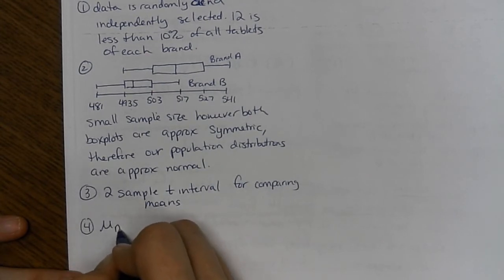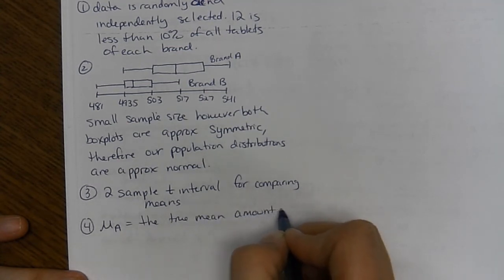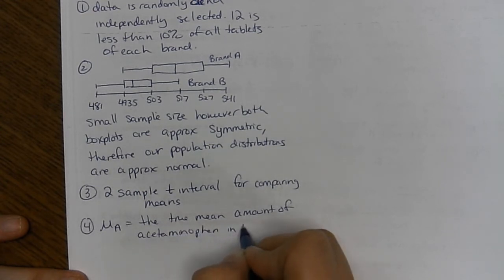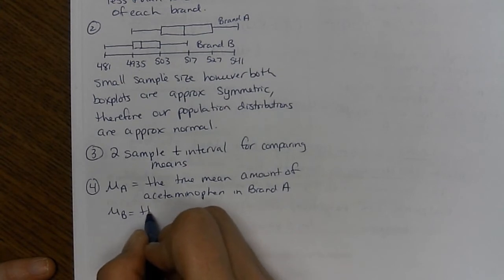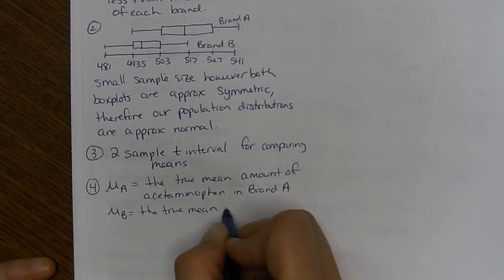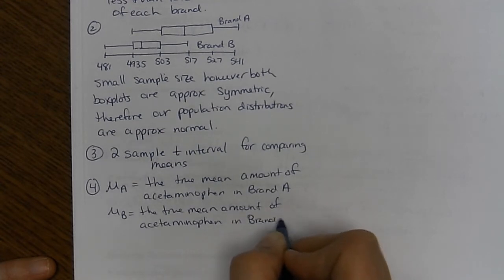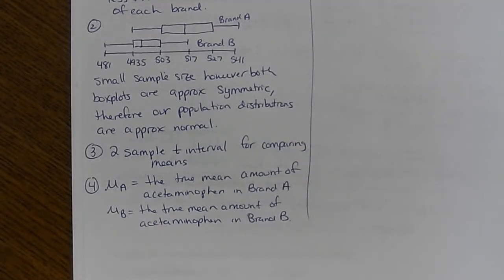So anytime you have data, it's a t-test. So this is a two-sample t-interval for comparing means. So I'm going to say mu A, the true mean amount of acetaminophen in brand A. And mu B is the true mean amount of acetaminophen in brand B. The conditions is the hard part. Really. Now it's pretty easy.